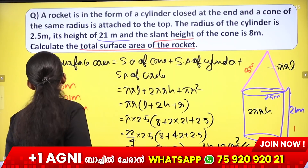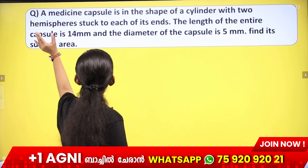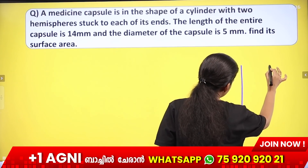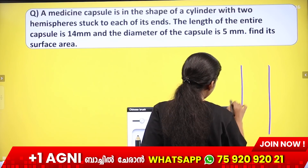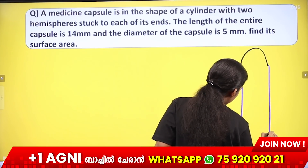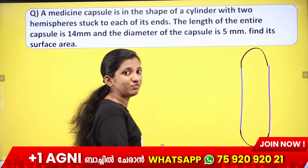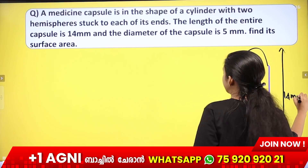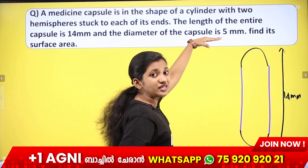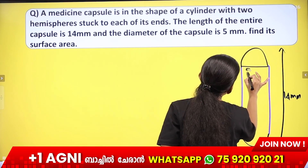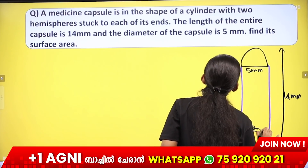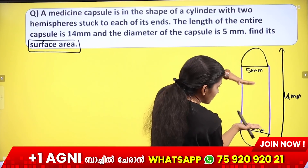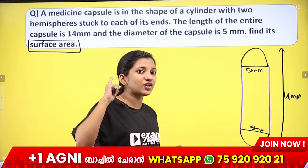Next question: This medicine capsule is in the shape of a cylinder with two hemispheres at each of its ends. The length of the entire capsule is 14 mm and the diameter of the capsule is 5 mm. Find the total surface area.